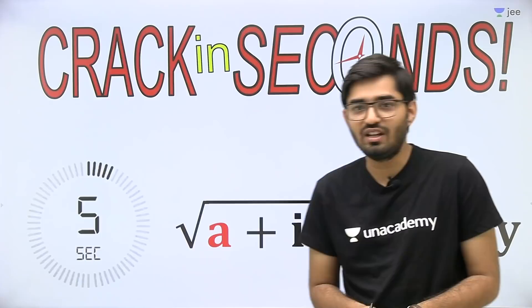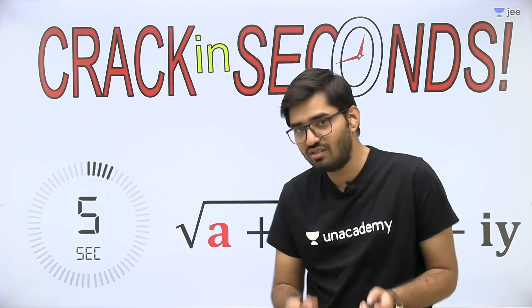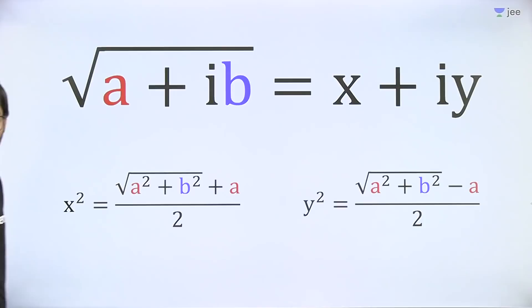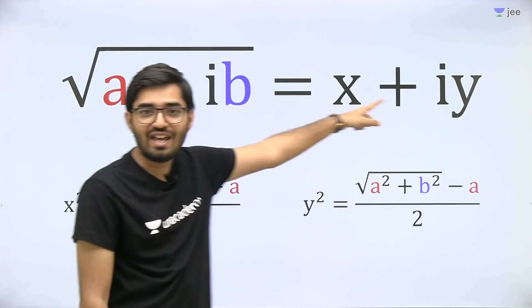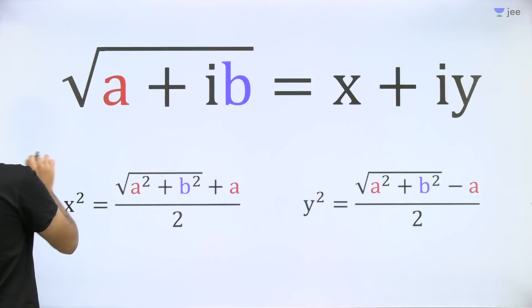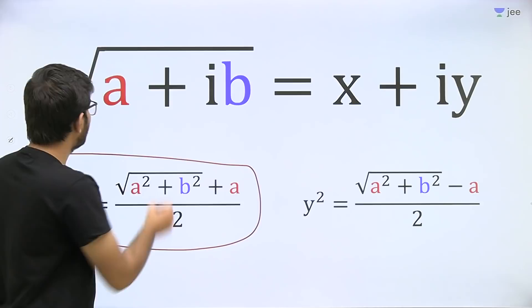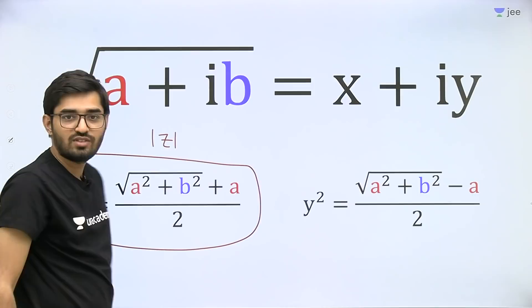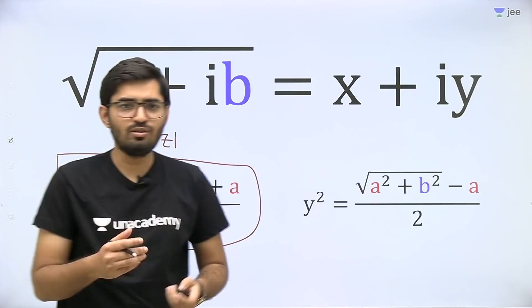Any complex number given — literally any complex number in this universe — if you want to find the square root of that complex number, we can easily find it just in seconds. So without any further delay, let us directly start. Let's say the answer is x + iy. We need to find the value of x and y. For x, directly use this formula: x² = (√(a²+b²) + a) / 2, and y² = (√(a²+b²) − a) / 2. Here √(a²+b²) is mod z, the modulus of z. That's it.